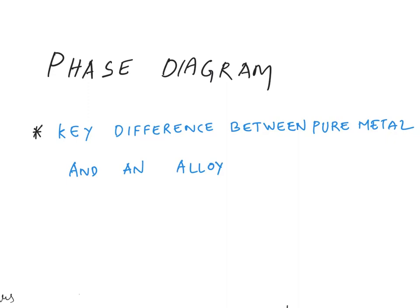The key difference is that when it comes to a pure metal, there is a definite melting point or boiling point.